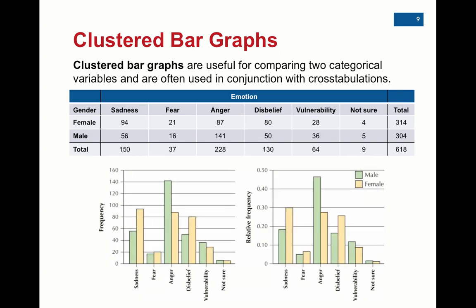From that, we can create a clustered bar graph — we're going to do this in Excel. Whether using frequency or relative frequency, the clustered bar graph shows the percentage or frequency of each emotion based on male and female. The males are shown in green and the females in tan. You can see that men mostly felt anger — anger was the most popular emotion for males — while sadness, anger, and disbelief were kind of all a tie for females. Clustered bar graphs and cross-tabulations are a good way to look at data for two variables at the same time.